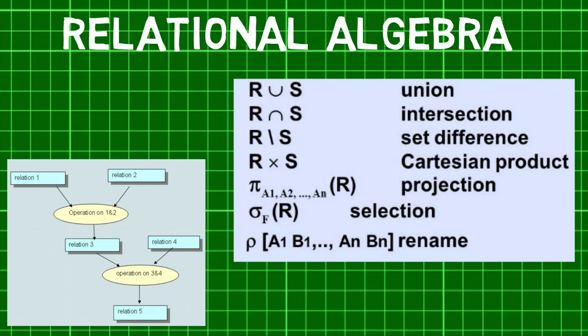There are six fundamental relational algebra operations. First is a select operation which selects tuples that satisfy the given predicate from a relation. Second comes the project operation which projects columns that satisfy a given predicate.